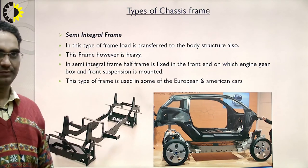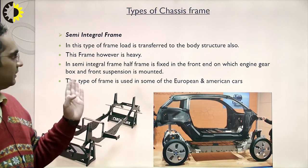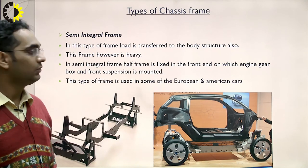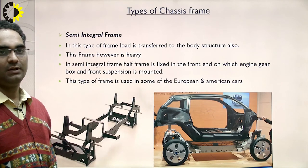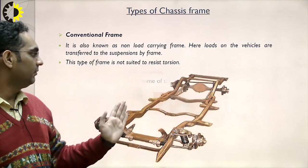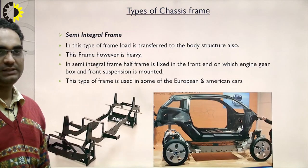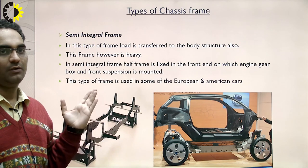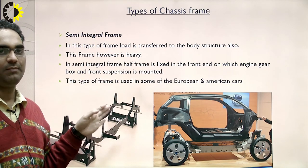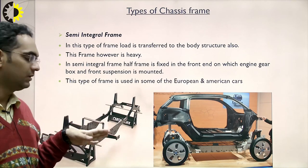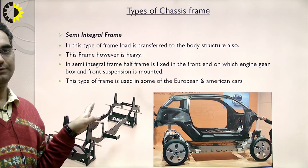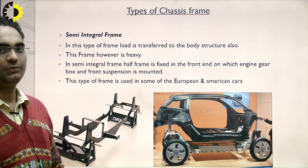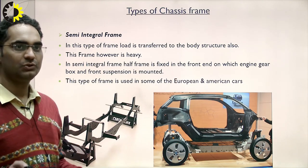In the semi-integral frame, the load is transferred to the body structure as well; however, this frame is heavy. Half the frame is fixed at the front end on which the engine, gearbox, and front suspension are mounted. This type of frame is used in some European and American cars.